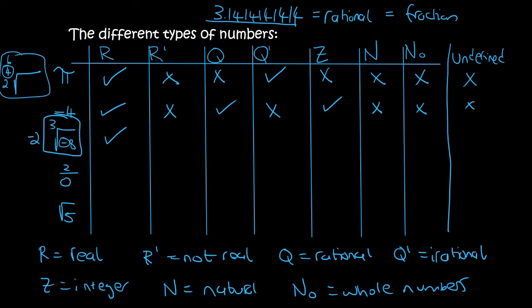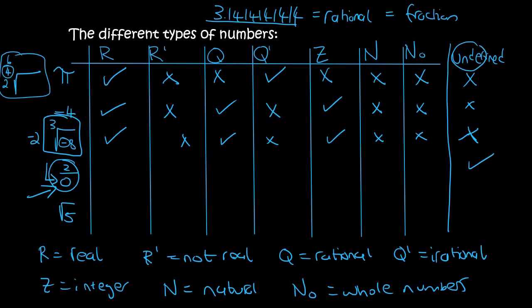Minus 2 is real, it's rational, it's an integer, but it's not natural and it's none of the others. For 2 over 0 — type it in on your calculator because in a test you don't want to be unsure whether 0 on the bottom causes an error. Just type it in and you'll get an error. That error is because of the 0 underneath, so it's undefined — and all the other categories will not apply.